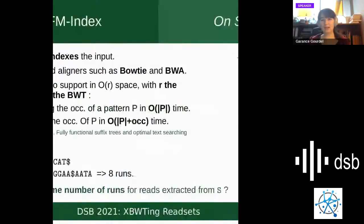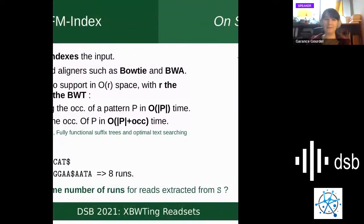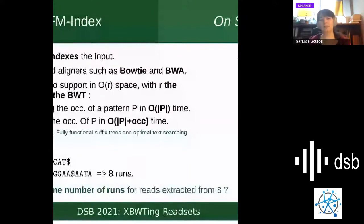The starting point is DFM-Lindex, which is a data structure based on DBWT that both compresses and indexes. It's a short read aligner such as Bowtie and BWA, and it has been recently improved to support space O(r), where r is the number of runs in the BWT. The two operations count(p) run in the complexity of the size of the pattern p, and locate(p) runs in |p| plus the number of occurrences.